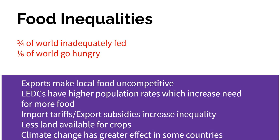Countries also have problems with less land being available — not everywhere is Iowa or Ukraine. In most places in the world, it's very difficult to grow food due to climate issues; it's harder to grow food in desert, hot, sunny climates, for example. We have competition for resources to maintain food production systems. Even though we can easily produce enough food to feed the world, one-sixth of the world goes to bed hungry every night, and three-quarters of the world probably doesn't get an adequate diet.